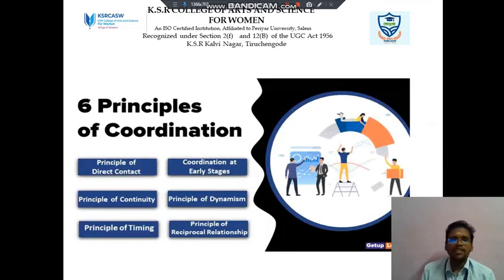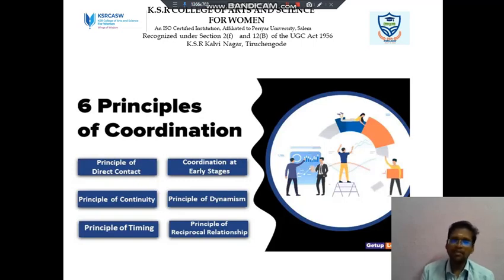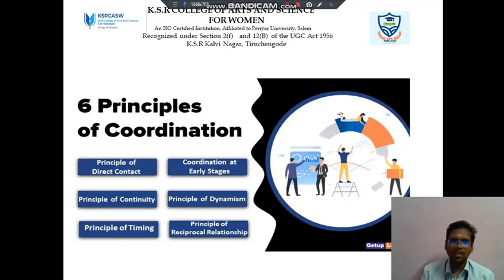Next we discuss about 6 Principles of Coordination, one by one. The first point is Principles of Direct Contact, then Principles of Continuity, then Principles of Timing, then Coordination at the Early Stage, then Principles of Dynamism, then Principles of Reciprocal Relationship. These are the 6 points in the Principles of Coordination.